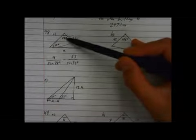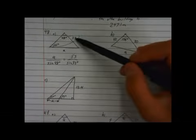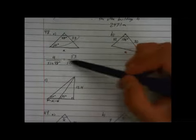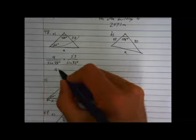I take my unknown, put it over its opposite, set it equal to the two known opposites, so 53 over 32, and take the sine of the angles. Don't ever take the sine of the sides, that's ridiculous.